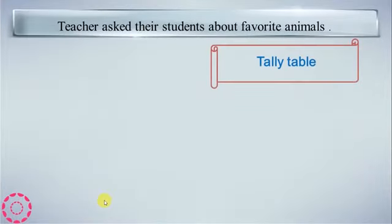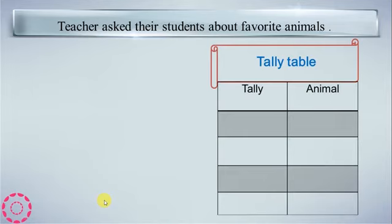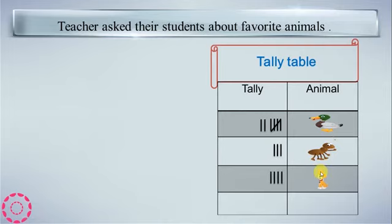Teacher asked their students about favorite animals. Some students like ducks: 1, 2, 3, 4, 5, 6, 7. Seven like ducks. Butterfly: 1, 2, 3, 4, 5.